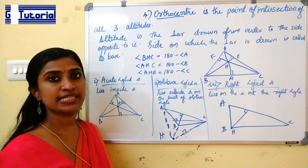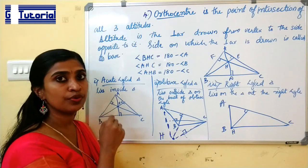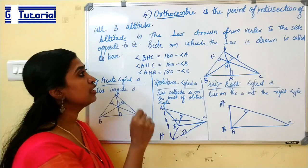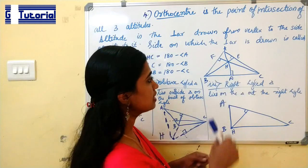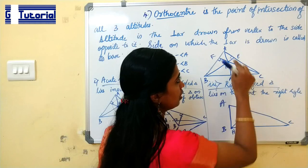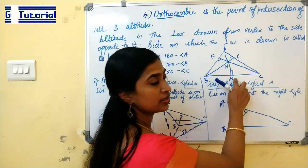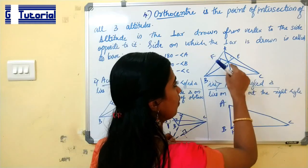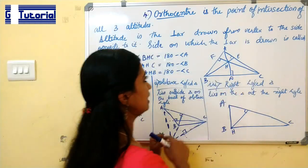Now let us study about the next center: orthocenter. Orthocenter is the point of intersection of all three altitudes. An altitude is a perpendicular line drawn from a vertex to the opposite side. AD is one altitude drawn from vertex A to the opposite side BC. Similarly, there are two other altitudes. The meeting point of all three altitudes is known as the orthocenter.